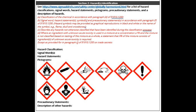The third line in this section describes any hazards not otherwise classified that have been identified during the classification process. OSHA defines these as adverse physical or health effects identified through evaluation of scientific evidence during the classification process that do not meet the specified criteria for the physical and health hazard classes. This could be due to an extremely low potential for risk. This can be broken down into two categories: physical hazards not otherwise classified, known as PHNOC, and health hazards not otherwise classified, known as HHNOC.